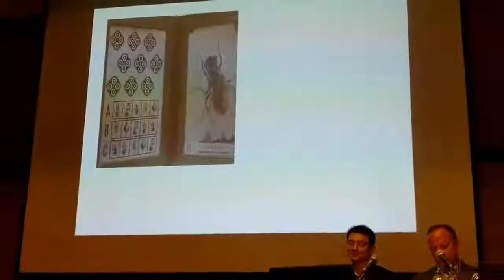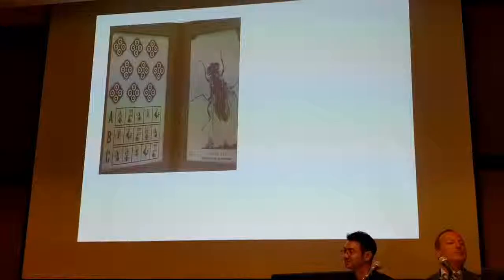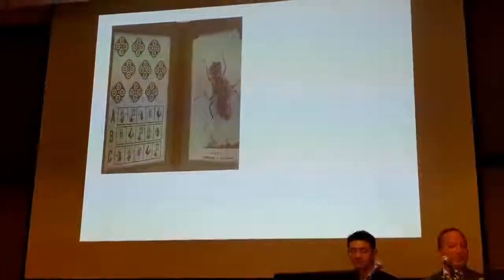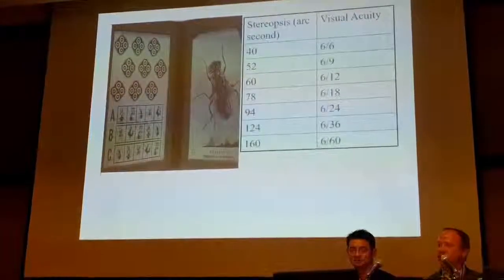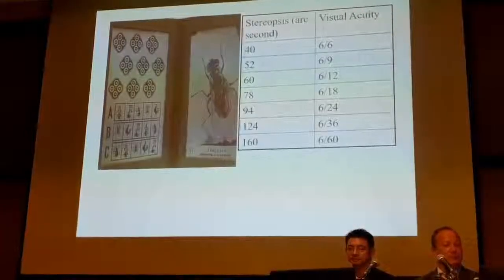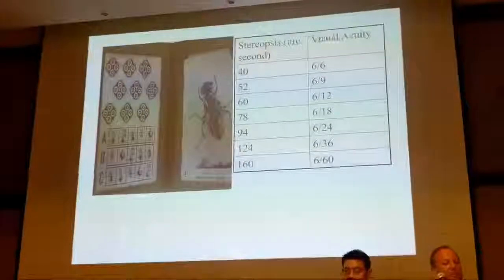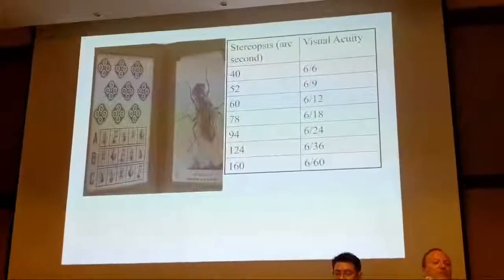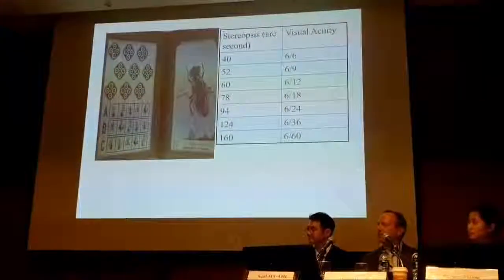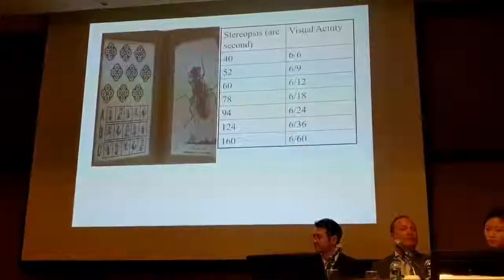Another test I find useful for unilateral loss of vision is the stereoacuity test. You need two eyes for depth perception, and even with the Stereo Titmus test, the number of arc seconds can be converted to a visual acuity. You preface it carefully — don't tell the patient you're testing stereo; instead say, 'I wonder whether this has affected your depth perception, let's have a look.' Many times, they will have no problem at all.